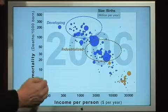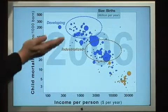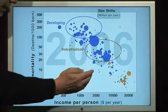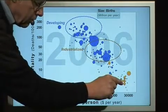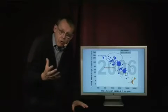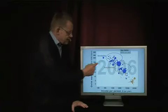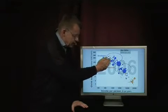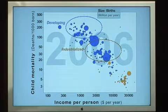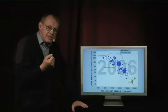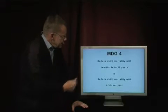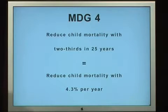The high income countries have very high income and very low child mortality, but also some formerly developing countries have reached all the way down. Most countries in the world are in the middle position, and some have very high child mortality and low income. Millennium Development Goal number four is specified by the United Nations as a lowering of child mortality by two thirds in 25 years — that is in one generation.